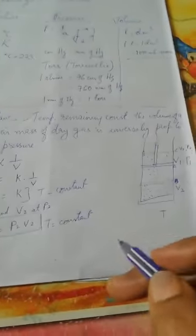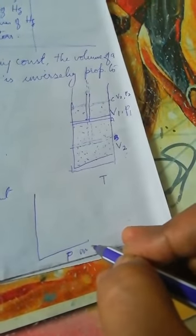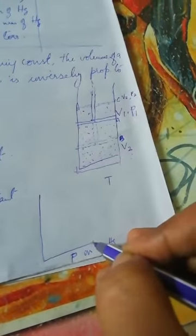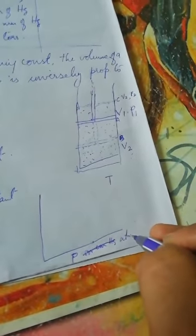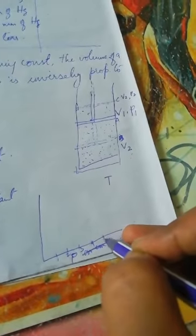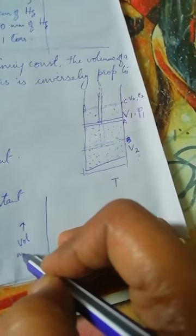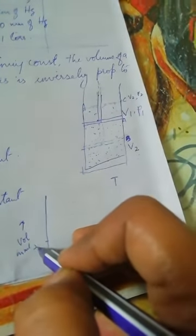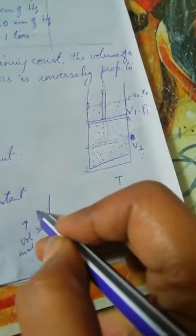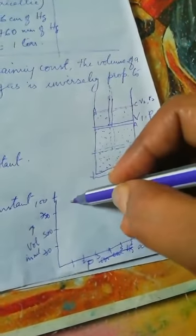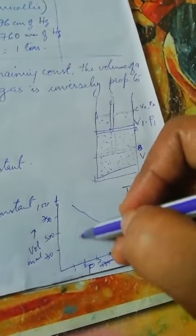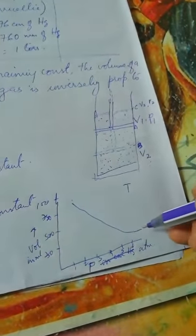Plotting a graph with pressure on the x-axis in atmospheres and volume on the y-axis in ml shows a curve of inverse relationship. When the volume is maximum, the pressure is least. When volume decreases, pressure is maximum.